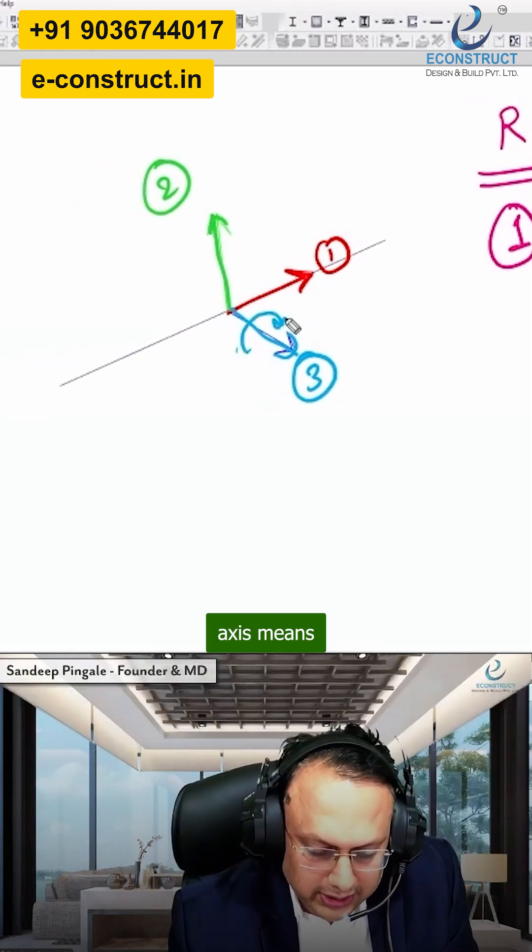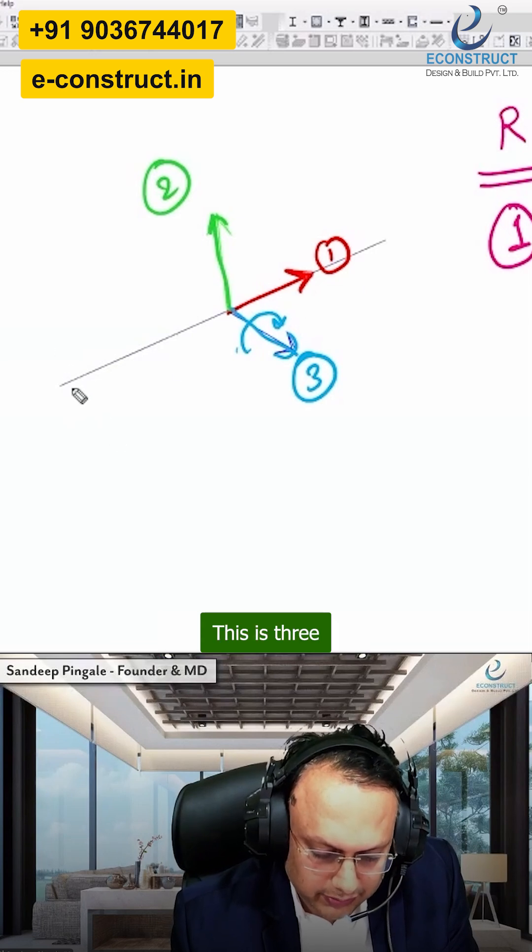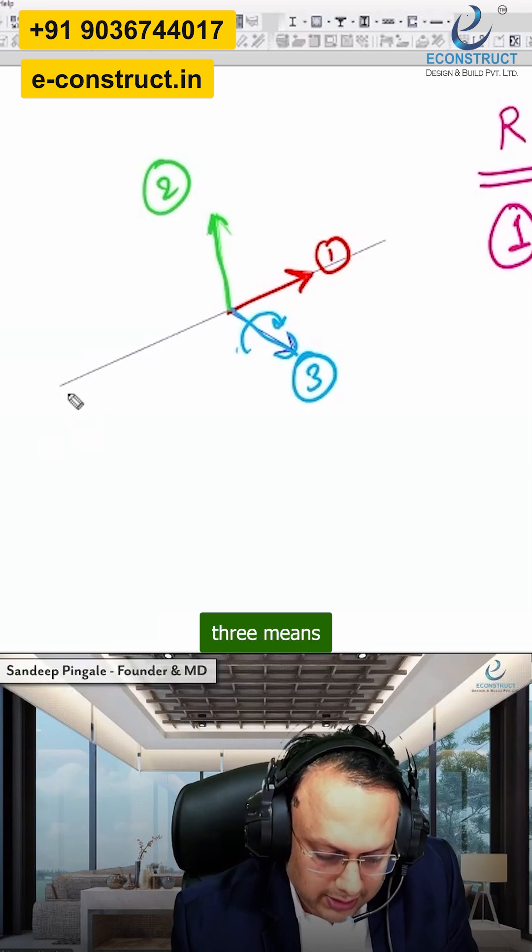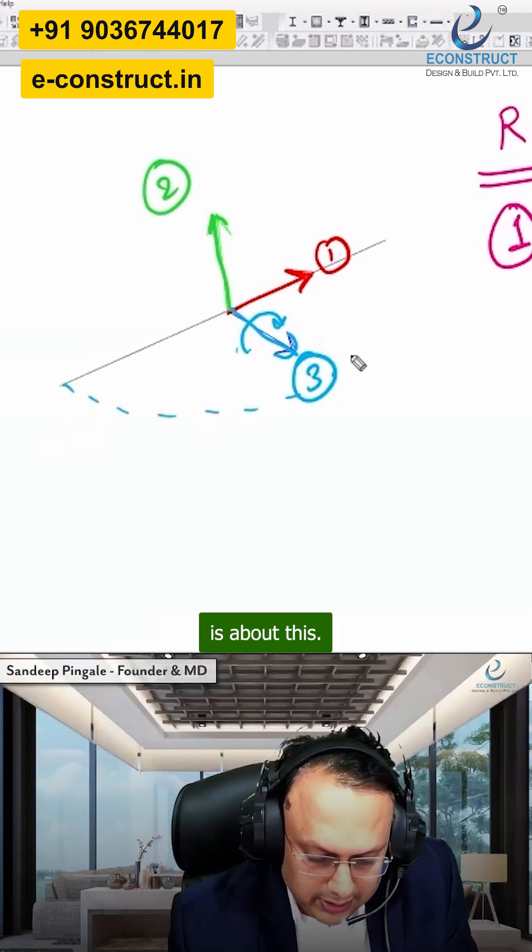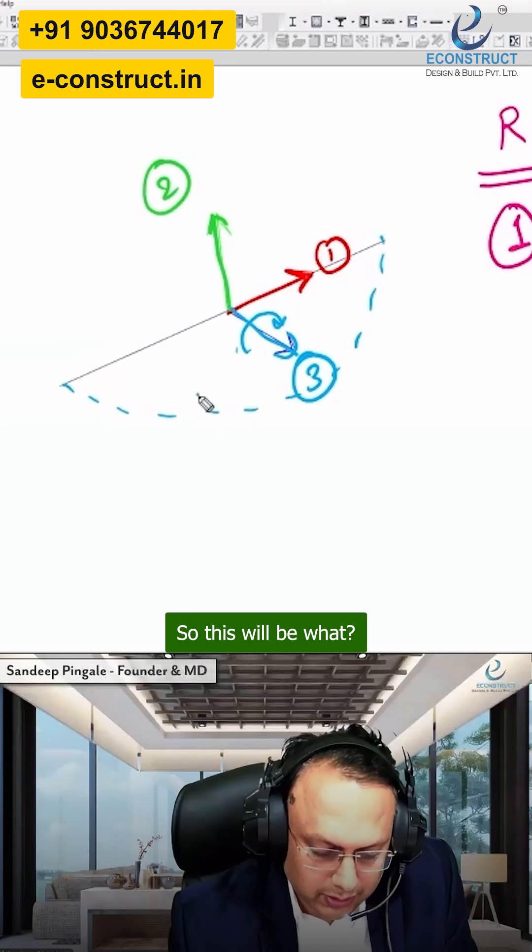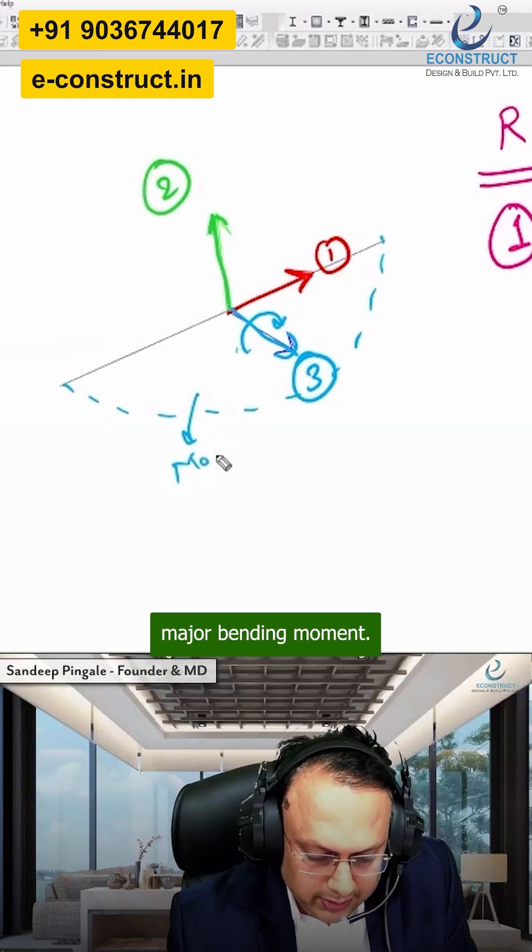...means the bending. Now this is three. About the three-axis means, let's say if the bending moment is about this, so this will be what? Major bending moment.